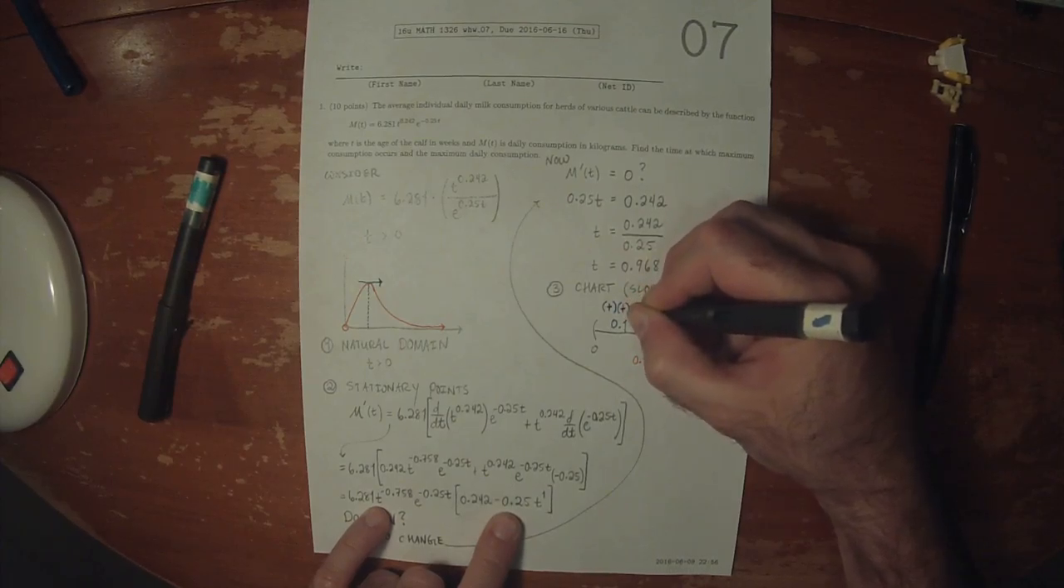So if we plug this value into the derivative, positive, that factor is positive, that factor is positive, that factor is positive, and this factor will also be positive. So it's positive. If we plug in 1, then this factor is positive, that factor is positive, and that factor is negative. So the overall sign in this region is positive, so it has positive slope. And the overall sign in this region is negative, so it has negative slope.